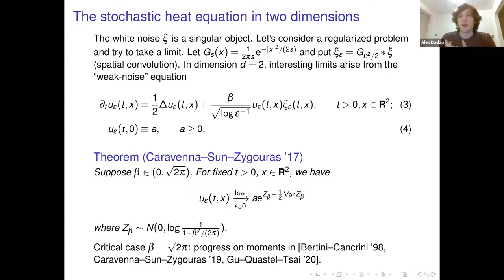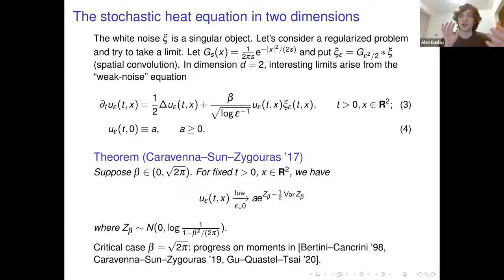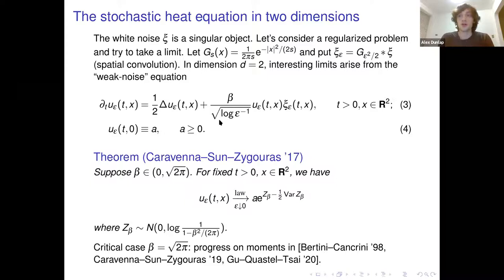Since we can't understand the singular problem directly, we mollify the problem and consider a smooth noise — convolve the noise with a spatial mollifier, a Gaussian of standard deviation epsilon. We want to take a limit as epsilon goes to zero. It turns out you don't get anything directly, but if you divide the noise strength by square root of log epsilon, you get interesting limits. You have to consider a very weak noise problem to get anything nontrivial.